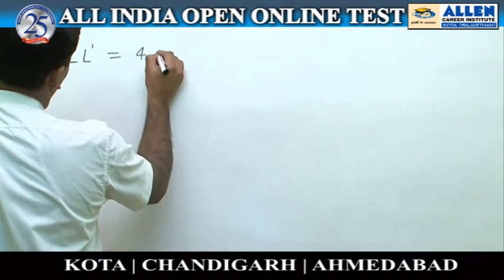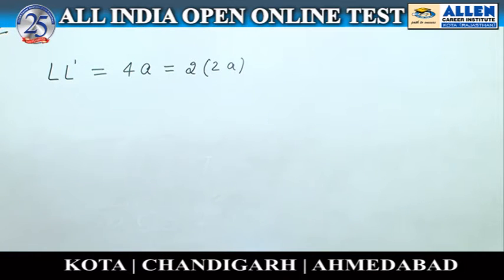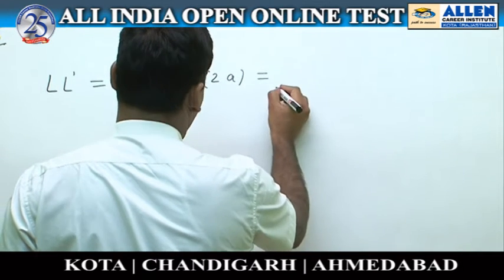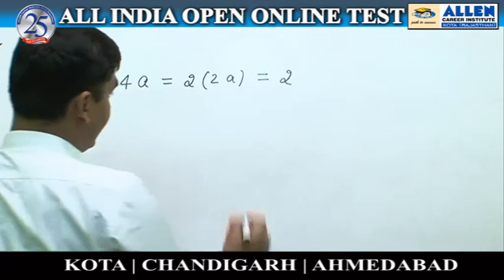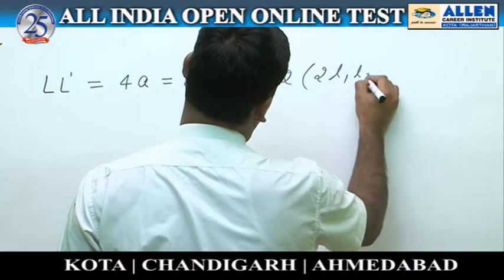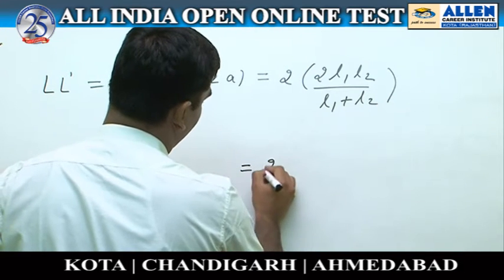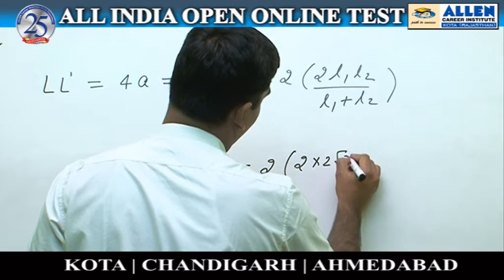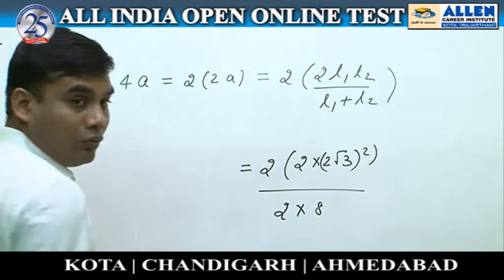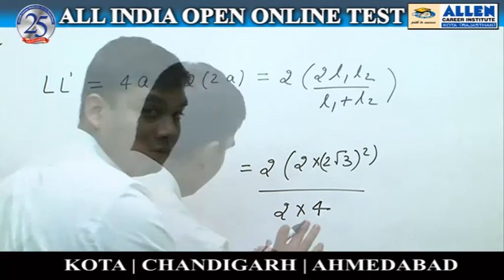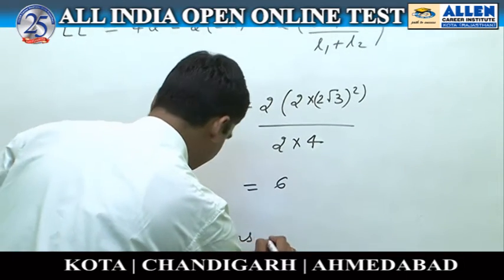is equal to 4a, which is 2 times 2a. 2a is the length of the semi-latus rectum. From the property of the parabola, we know that the semi-latus rectum is the harmonic mean of the segments of the focal chord. Therefore 2a equals 2·l1·l2 / (l1 + l2). This equals 2 × (2√3)² divided by 2 × 2 × 4 = 6. Therefore the answer is option number 1.